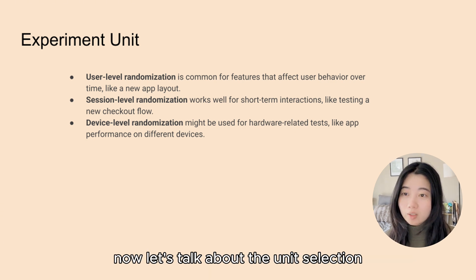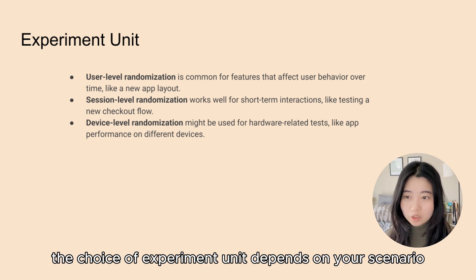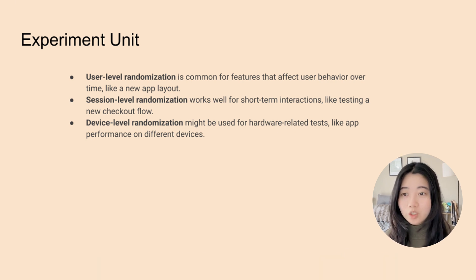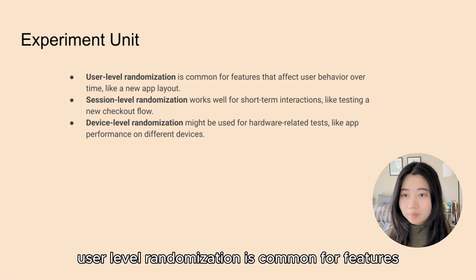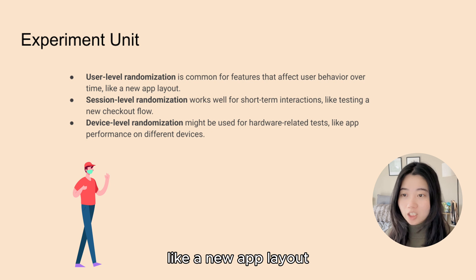Now let's talk about unit selection. The choice of experiment unit depends on your scenario. User-level randomization is common for features that affect user behavior over time, like a new app layout.